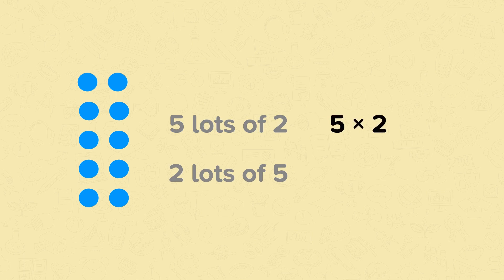Let's start by using arrays. This array shows either 5 lots of 2 or 2 lots of 5. This is the same as 5 times 2 or 2 times 5. You can use the array to help you. You could count each dot, but if you can already count in your 2s or 5s, you can count each group. You can count in 2s.